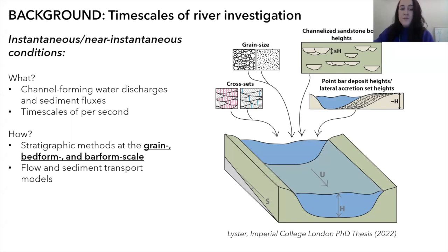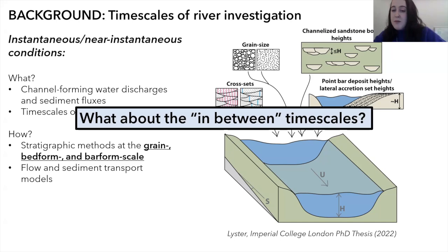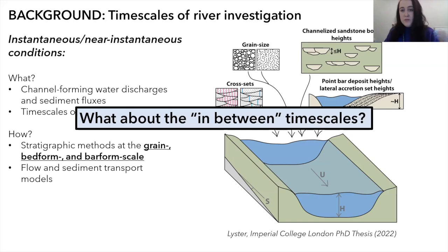What about the in-between timescales? We can reconstruct mean conditions and instantaneous conditions, but we're often most interested in flow variability. When thinking about modern fluvial systems responding to climate change, we pay attention to drastic changes in the variability of discharge — how the distribution of flow changes during the year, how the extremes change. For the geological past, we'd quite like to reconstruct that in-between timescale and think about how flow variability changed in response to past climate.